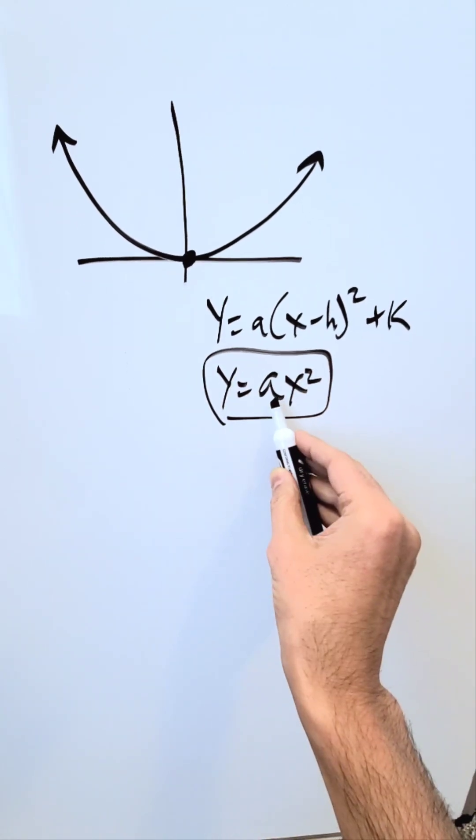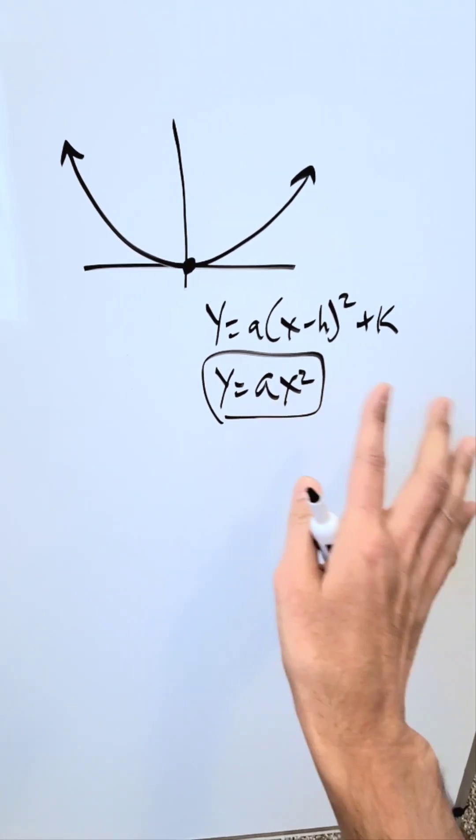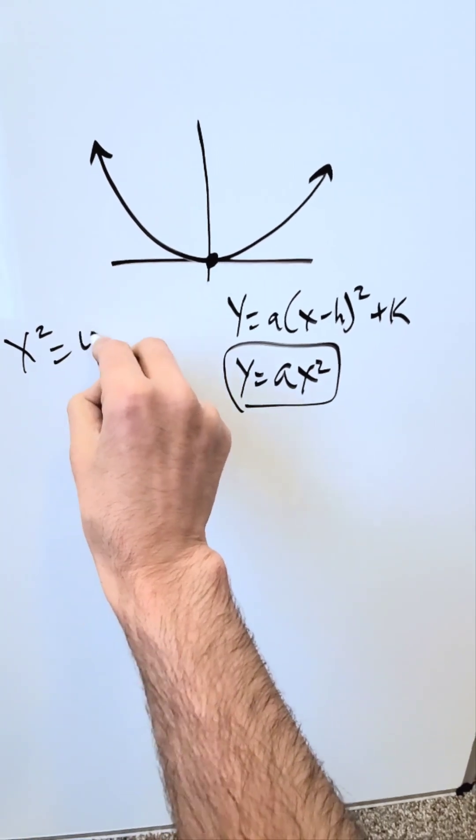where a, based on its value, gives you some form of horizontal or vertical compression or stretch. But there is another form. You know that to be x squared equals 4py.